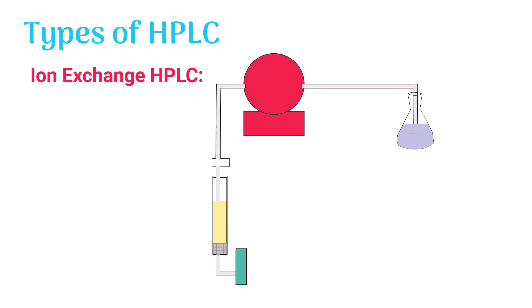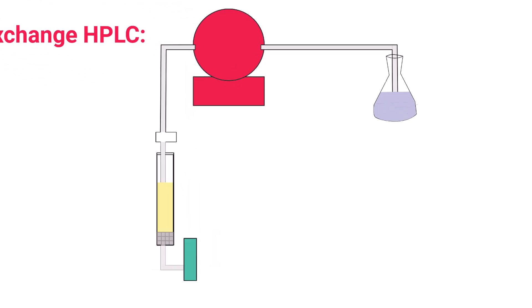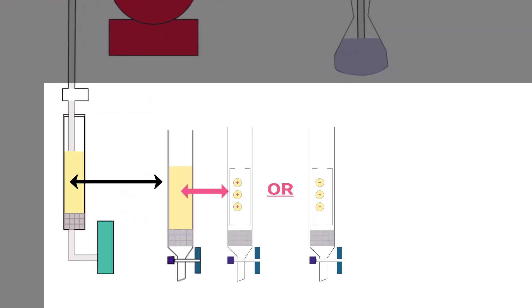Ion-exchange HPLC. In ion-exchange HPLC, the stationary phase has either positive or negative charges on it. If the sample molecules are negatively charged, the stationary phase has positive charges.